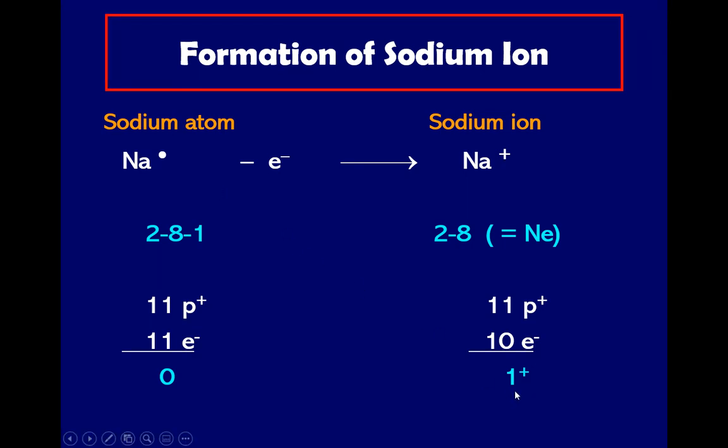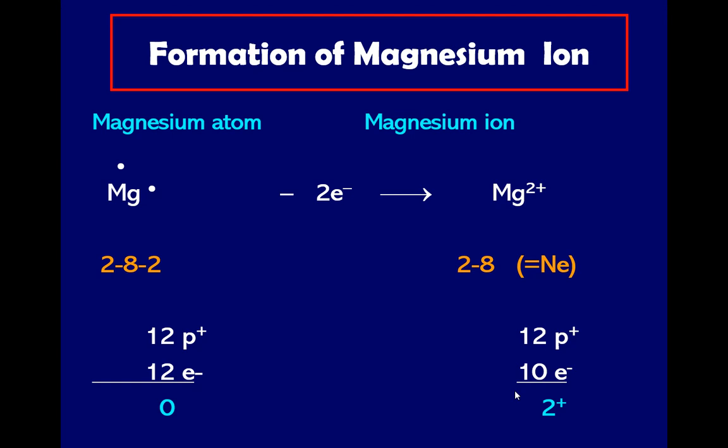Now in terms of magnesium ion, since magnesium has a valence electron of two, if we look for the number of protons and number of electrons, both protons and electrons have 12 in terms of value, so 12 minus 12 is zero.